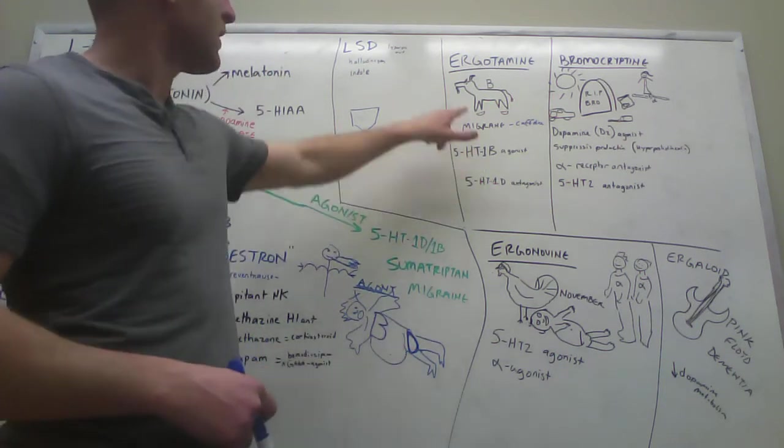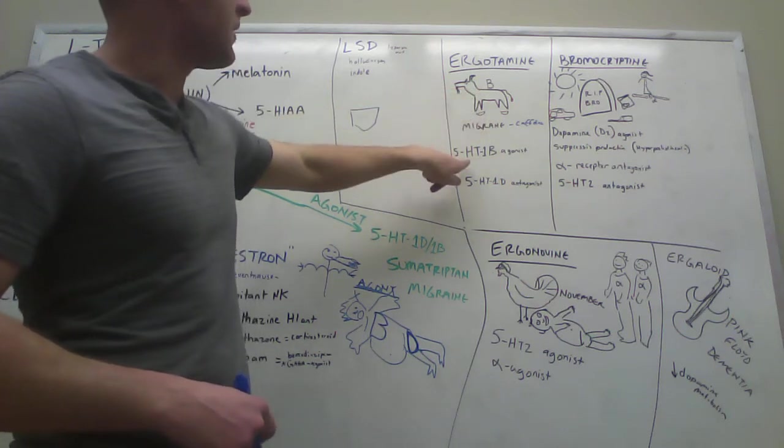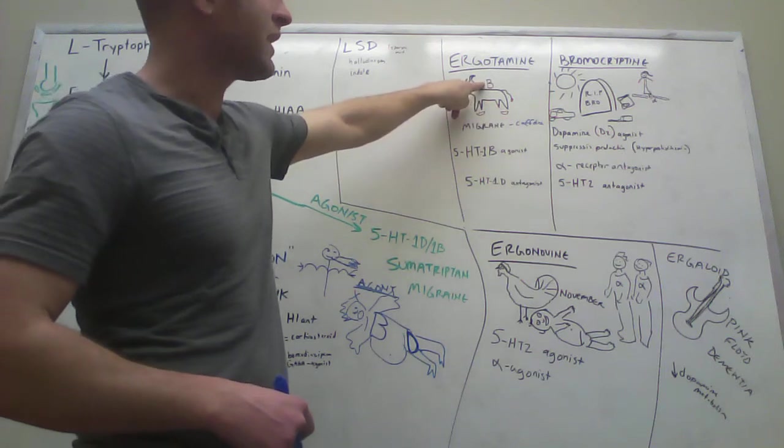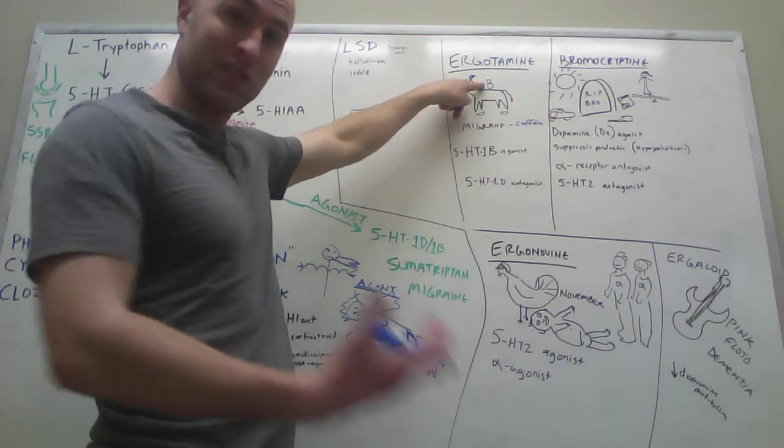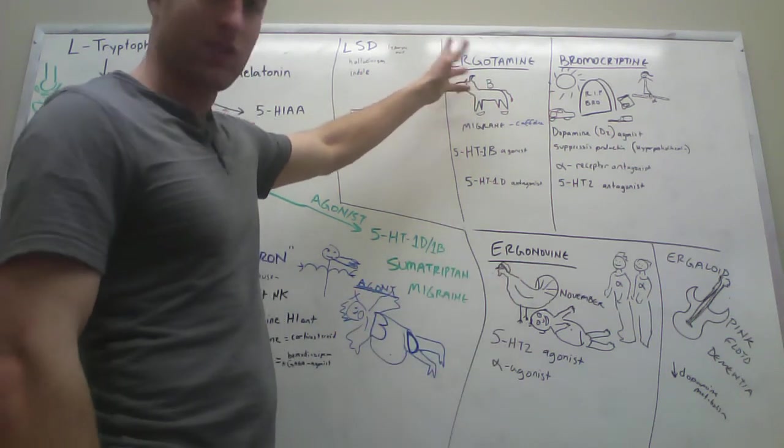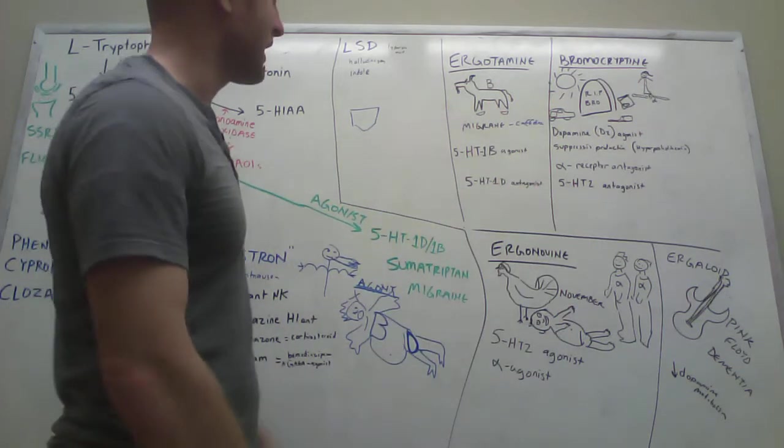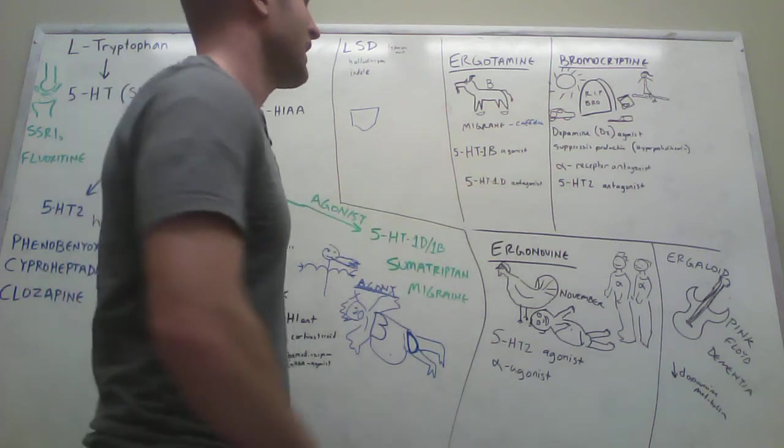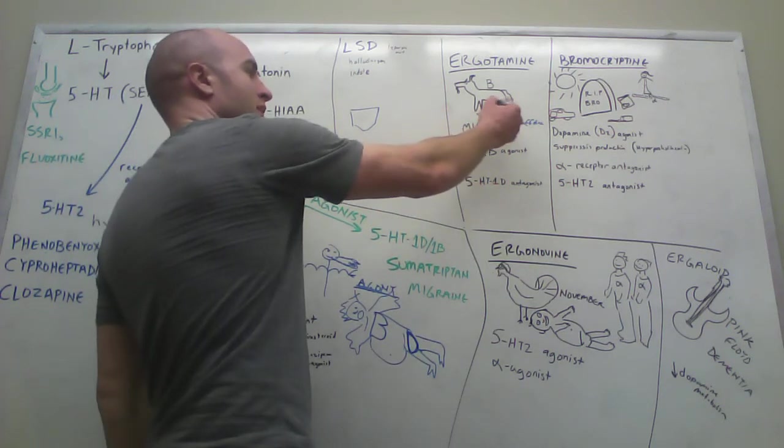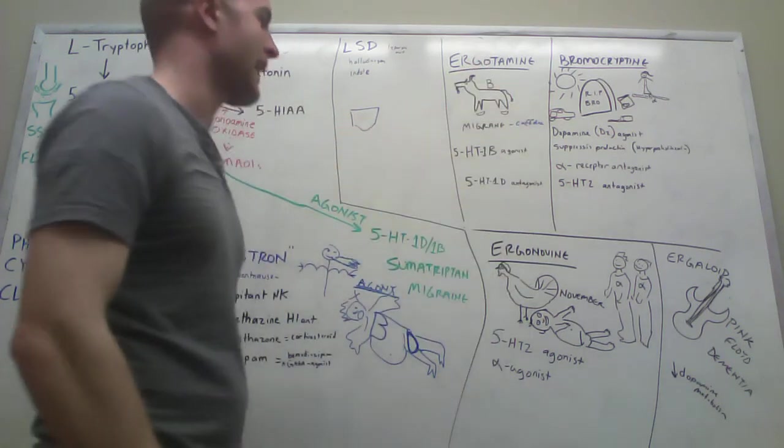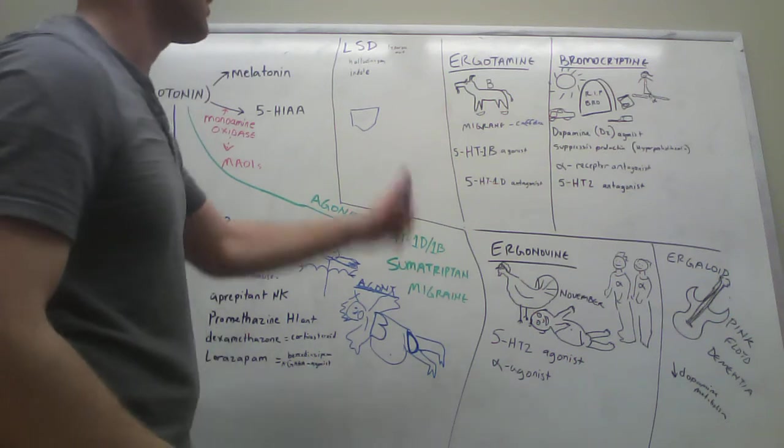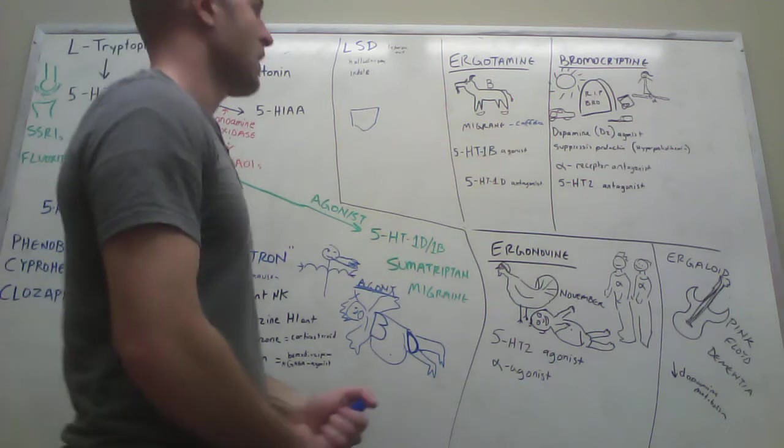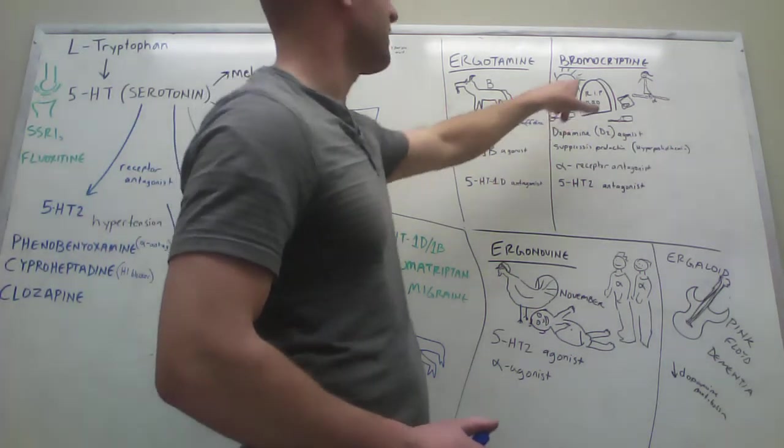You can see it is a 5-HT1B agonist. So the B gets to ride on his back because it's agonistic towards that. But it's a 5-HT1D antagonist, and so the D's are down here and the goat's stepping on them because it antagonizes the 1D. B's on the back - agonist. D's are on the floor - antagonist. Helps with migraines. Your goat is mean.